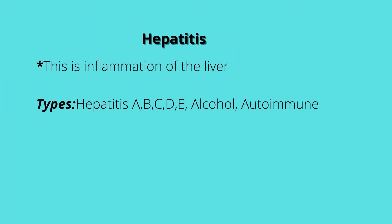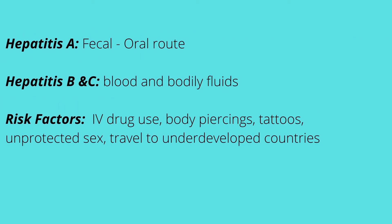Hepatitis is inflammation of the liver and we have various causes. We have hepatitis A, B, C, D, and E. Alcohol and autoimmune disorders can also cause hepatitis. Hepatitis A is transmitted through the fecal-oral route — for example, someone with hepatitis A contaminates a farm crop, you eat it without washing it. Hepatitis B and C are transmitted through blood and bodily fluids.